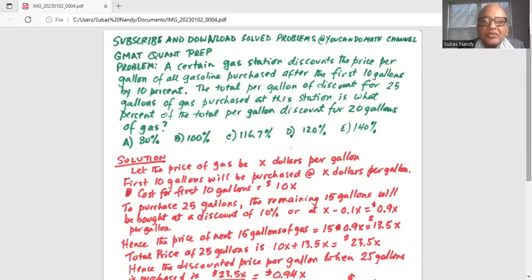Problem statement: A certain gas station discounts the price per gallon of all gasoline purchased after the first 10 gallons by 10%. The total per gallon discount for 25 gallons of gas purchased at this station is what percent of the total per gallon discount for 20 gallons of gas?